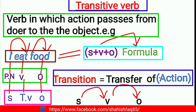For example, the sentence pattern is S plus V plus O — Subject plus Verb plus Object. The action transitions from subject through the verb to the object. If you have any confusion, you can comment. This is a very simple concept in English grammar.